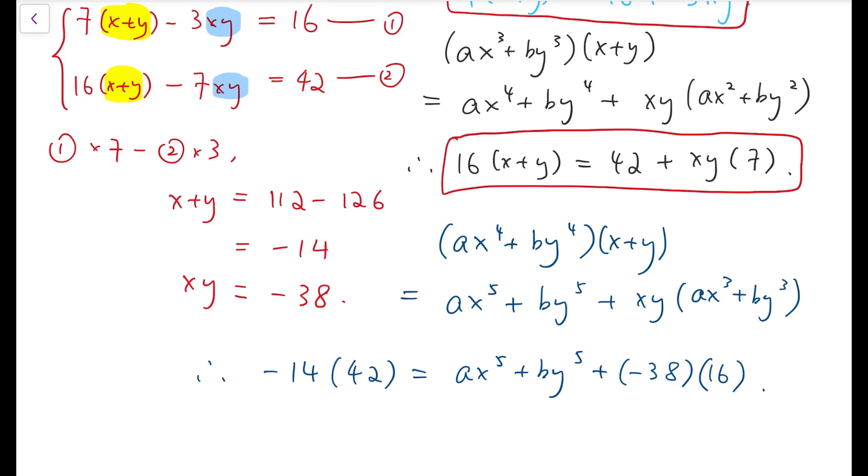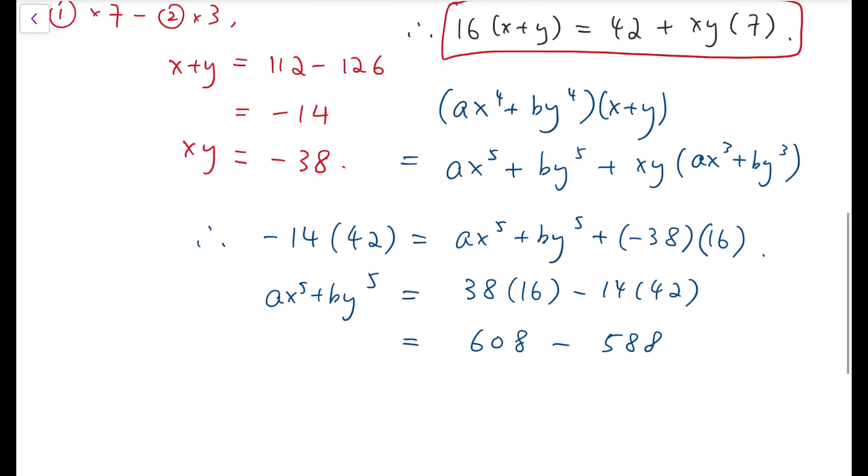So it's now time for some arithmetic. So our final answer would be 38 times 16 minus 14 times 42, and the first one would be 608 subtracted by 588, so our final answer is 20.